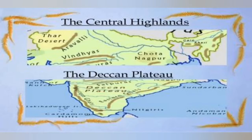The Central Highlands is the part lying north of the Narmada River, which covers most of the Malwa Plateau. The Vindhyan Range is bounded by the Central Highlands on the south and the Aravallis on the northwest. Its further westward extension gradually merges with the sandy and rocky desert of Rajasthan. It slopes from southwest to northeast, as indicated by the flow of the Chambal, Sindh, Betwa and Ken Rivers. The Central Highlands are wider in the west but narrower in the east. Its eastern edge consists of the areas known as Bundelkhand and Baghelkhand. The Chotanagpur Plateau marks the further eastward extension, drained by the Damodar River.